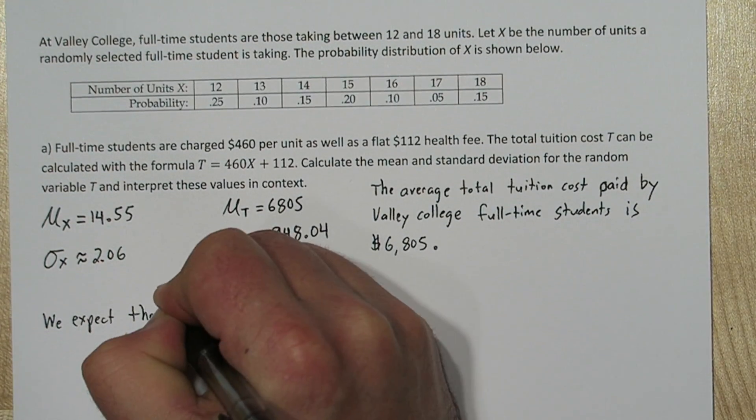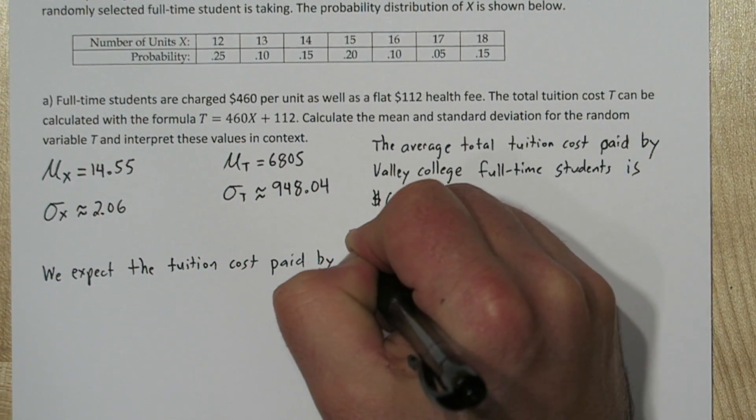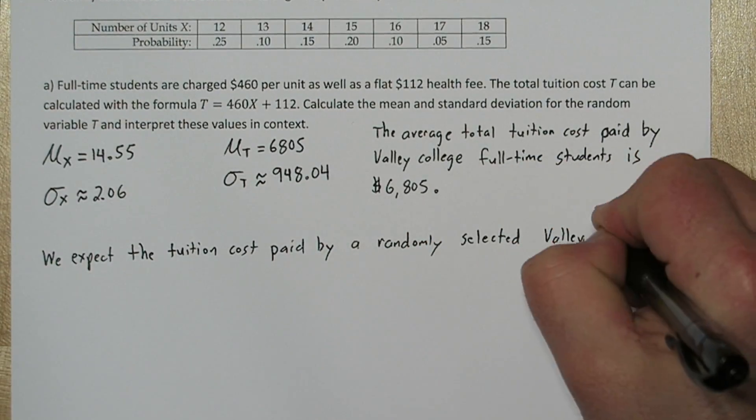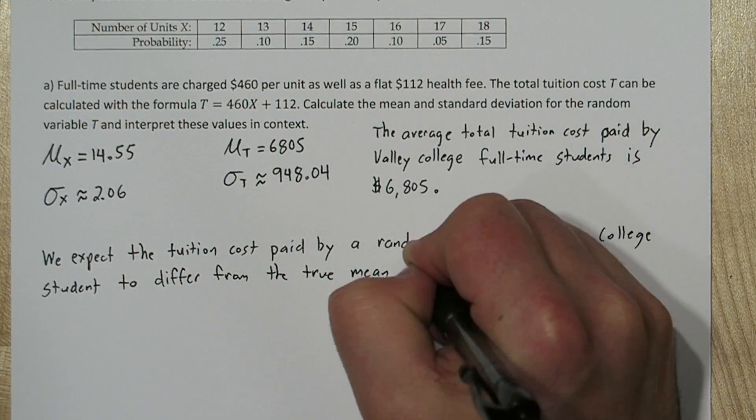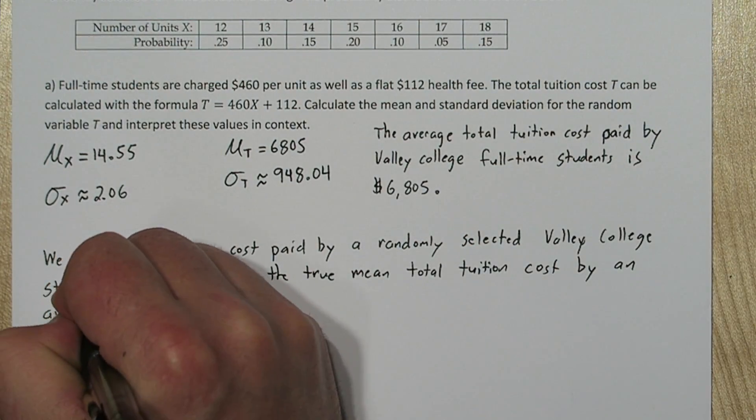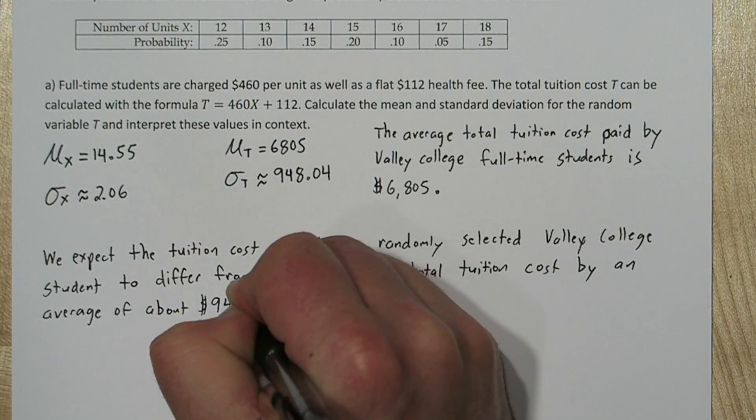For the standard deviation, a loose interpretation is, we expect the tuition cost by a randomly selected Valley College student to differ from the true mean total tuition cost by an average of about $948.04.